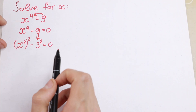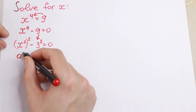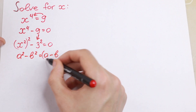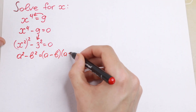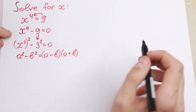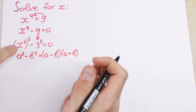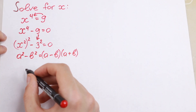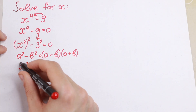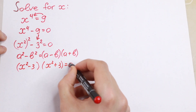So right now we have a difference of two squares, and we need to know the formula: a squared minus b squared equals a minus b, times a plus b. I hope you know this formula — it is a basic formula. Let's apply it in our case, with a equal to x squared and b equal to 3. We will have x squared minus 3, times x squared plus 3, equal to 0.